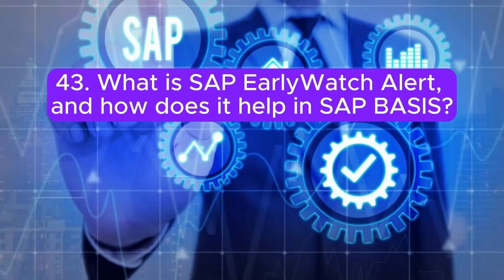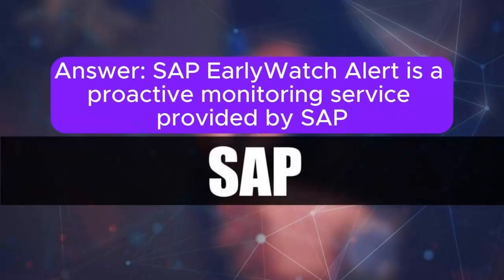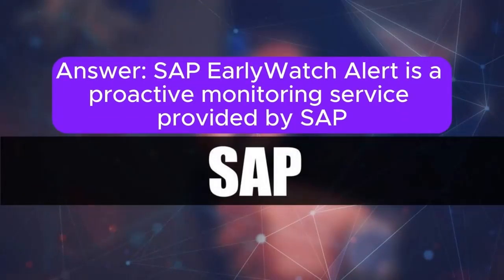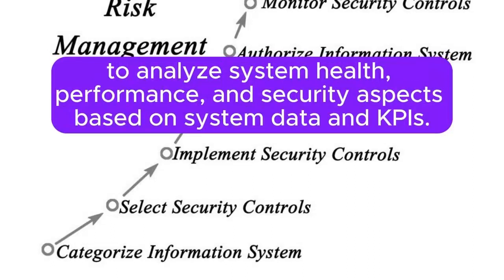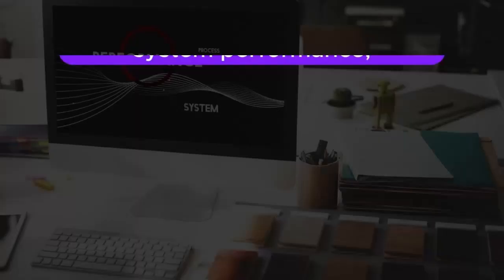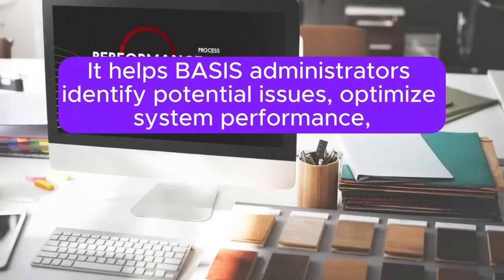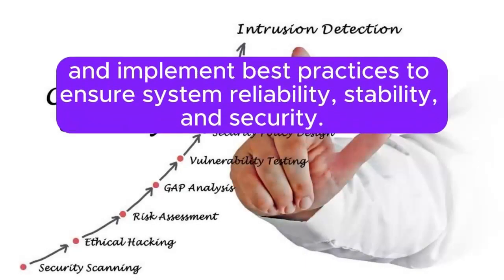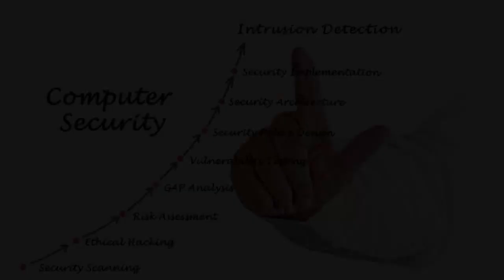Question 43: What is SAP EarlyWatch Alert and how does it help in SAP BASIS? SAP EarlyWatch Alert is a proactive monitoring service provided by SAP to analyze system health, performance, and security aspects based on system data and KPIs. It helps BASIS administrators identify potential issues, optimize system performance, and implement best practices to ensure system reliability, stability, and security.